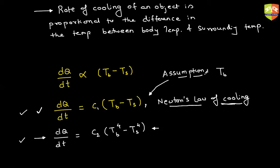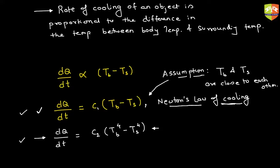Please write down the assumption: the temperature of the body and temperature of surrounding must be close to each other. Close doesn't mean equal — the body could be 80 to 100 degrees Celsius away from the surroundings, but not 300 or 1000 degrees away. As long as the temperature difference is between about 5 to 100 degrees Celsius, you can use Newton's Law of Cooling.